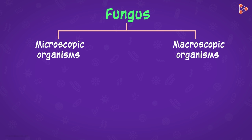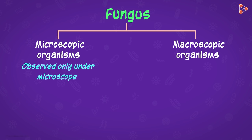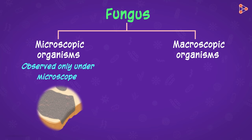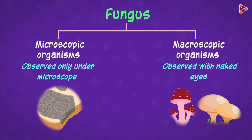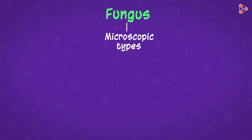What do we mean by this? Microscopic means those which can only be observed under the microscope, so the cottony growth that you find on stale bread can be included in this category. On the other hand, macro means huge, so those which are big enough to be observed with naked eyes are macroscopic organisms. Mushrooms and puff balls can be included in this category.